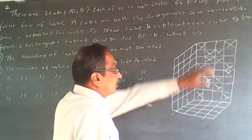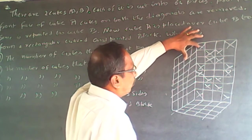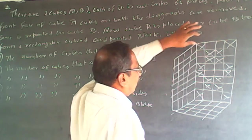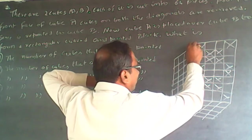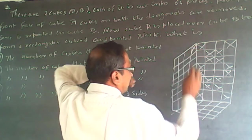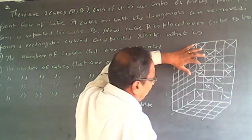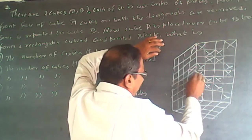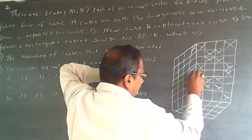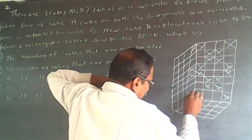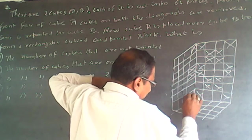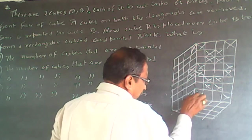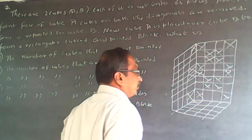Because this corner cube is removed, this will be part of the cube and this will also not be there. Similarly, this part will not be there, this also will not be there, this will not be there, and similarly this also will not be there. This is part of the same cube.